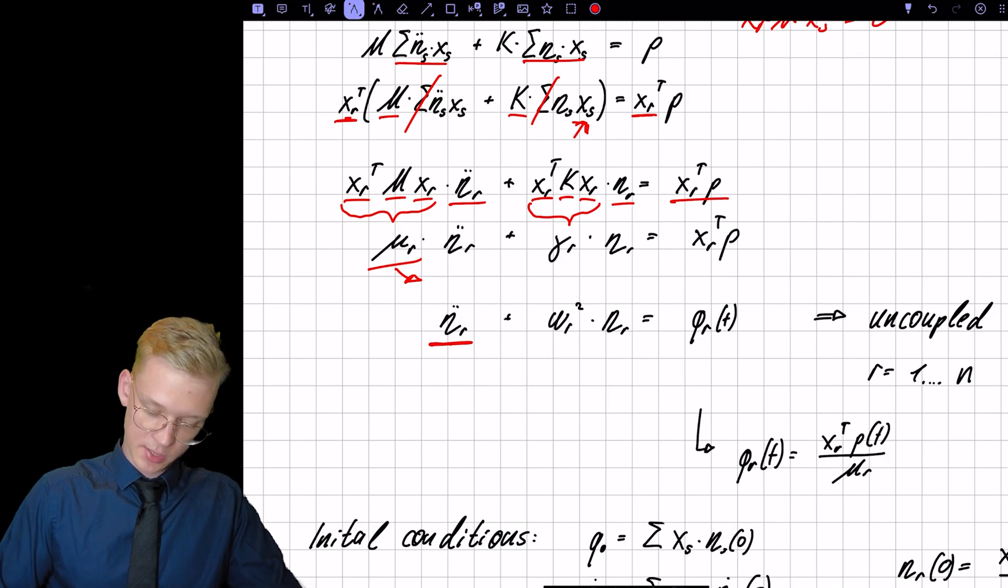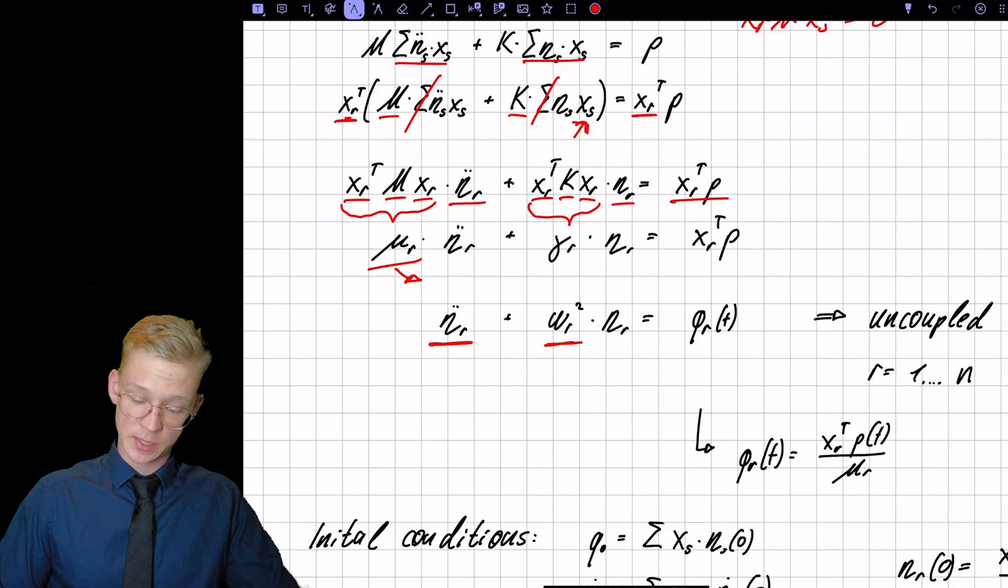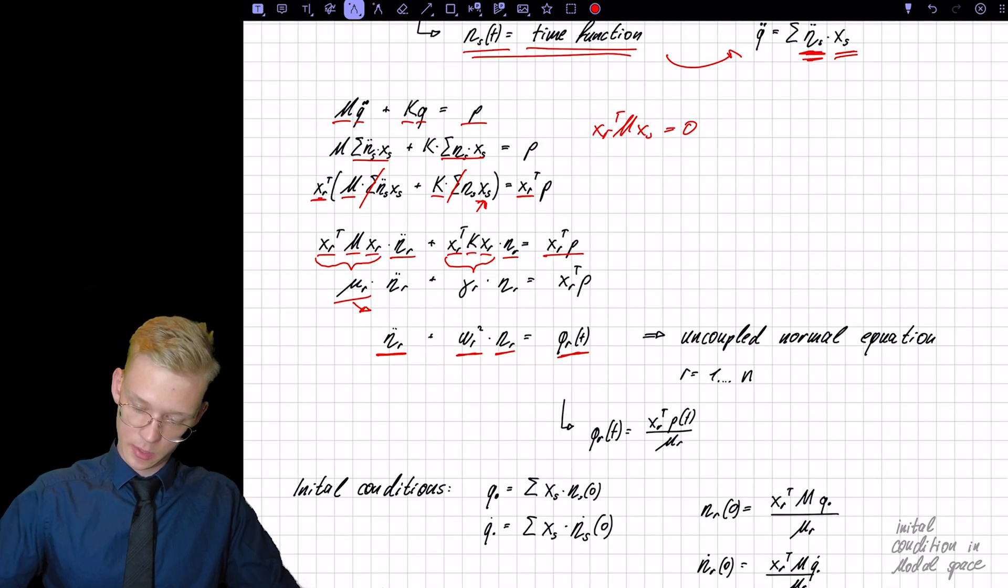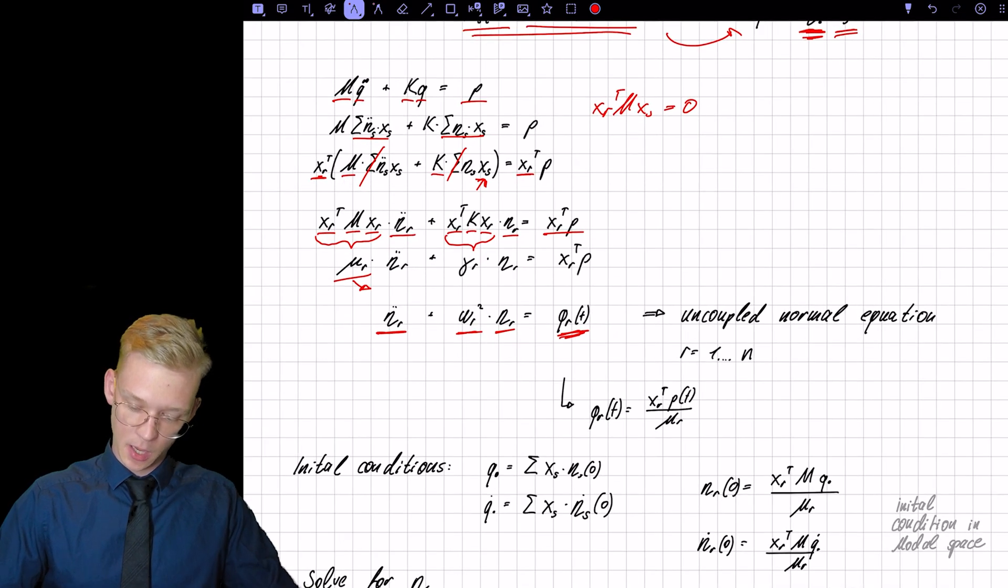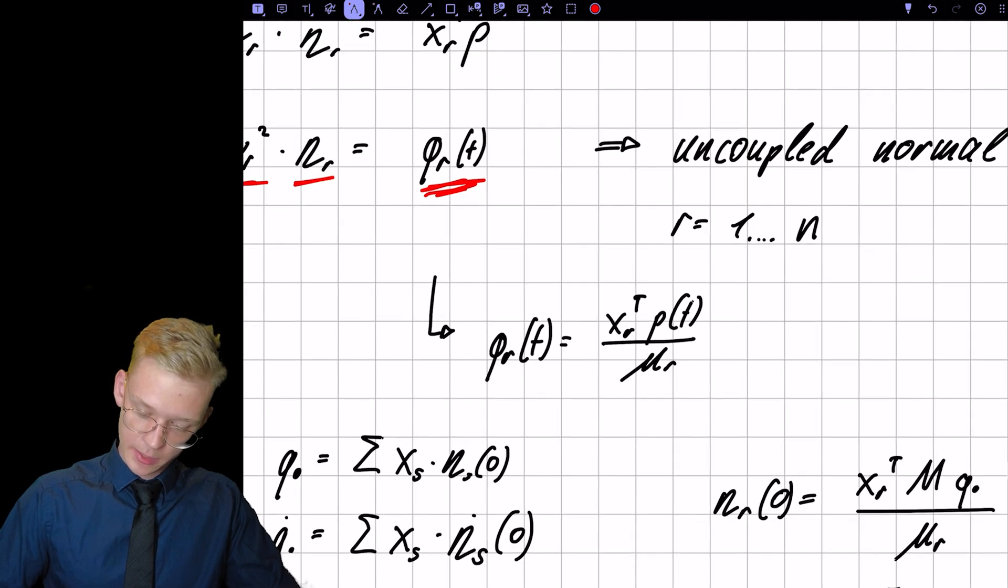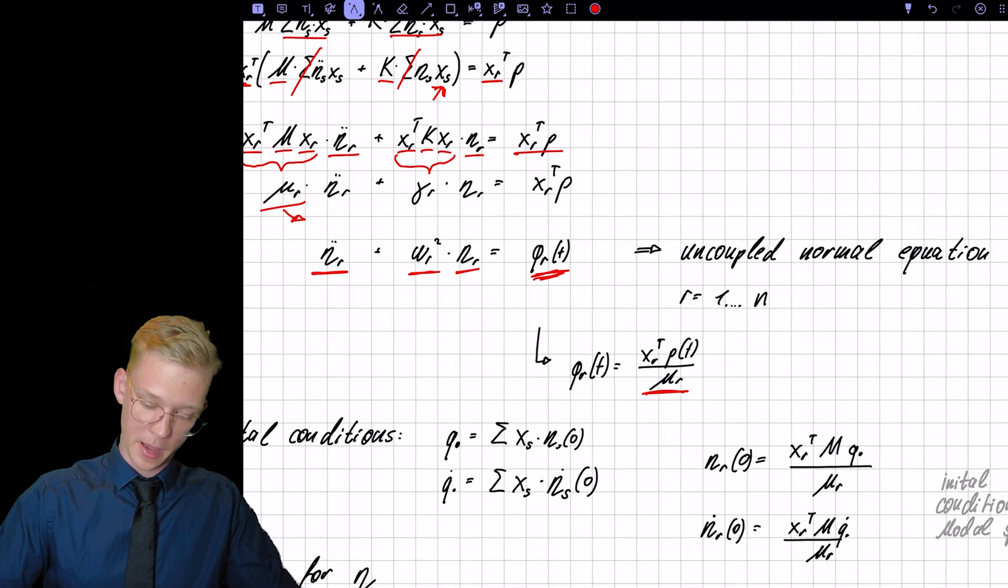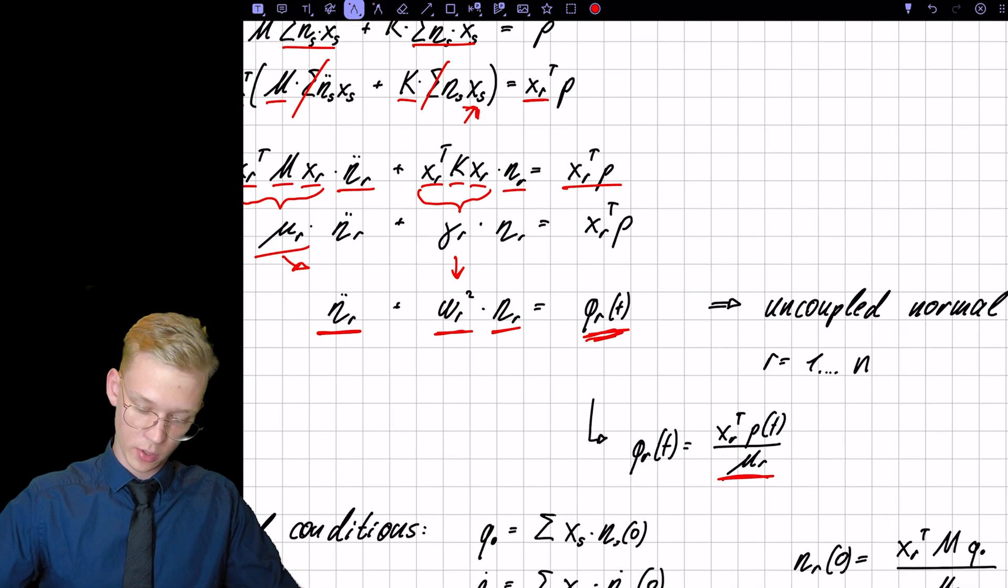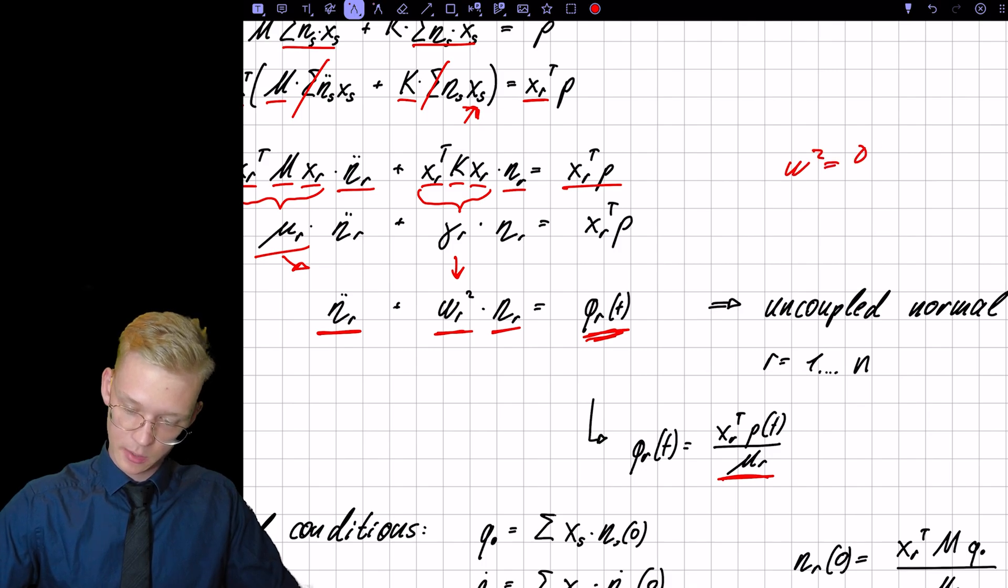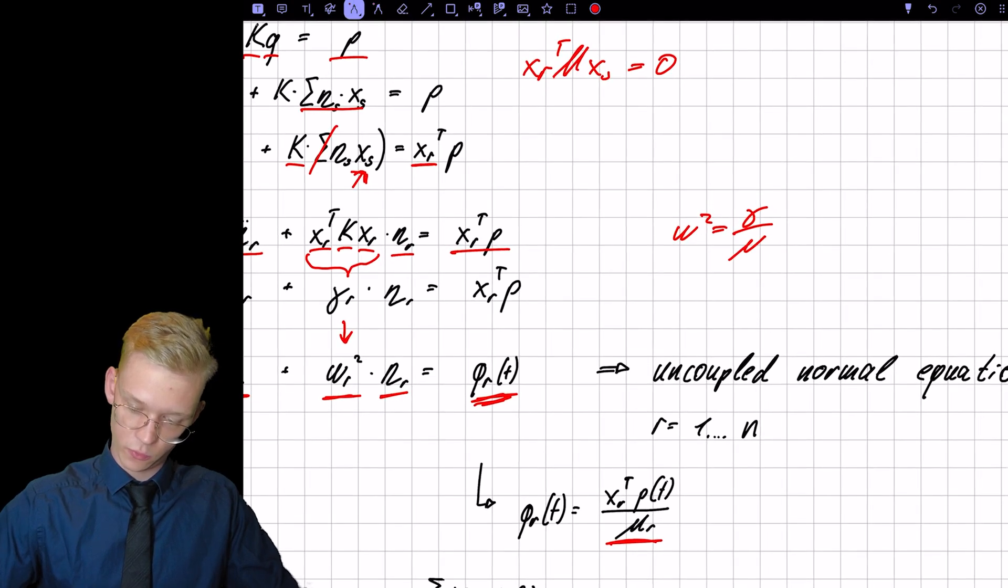we will get just the time function plus our eigenfrequency squared times eta is our new uncoupled normal equation. So this is our time, our function that is also divided by our modal mass. And we change from gamma to omega because omega squared is gamma divided by mu.